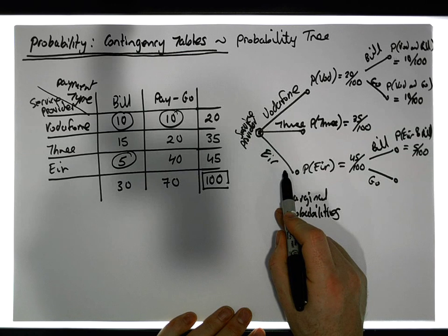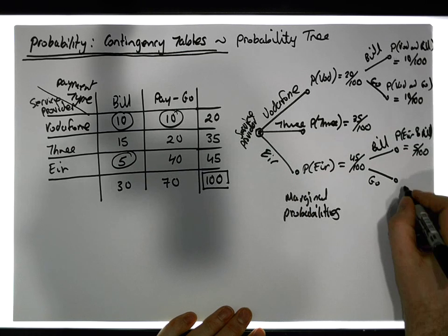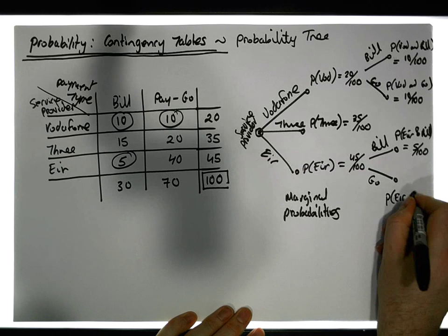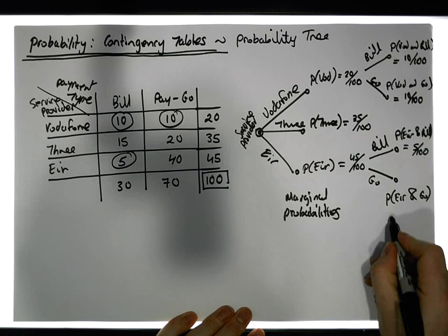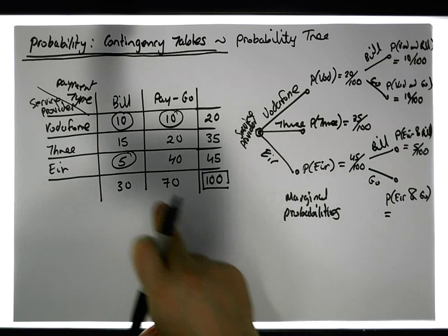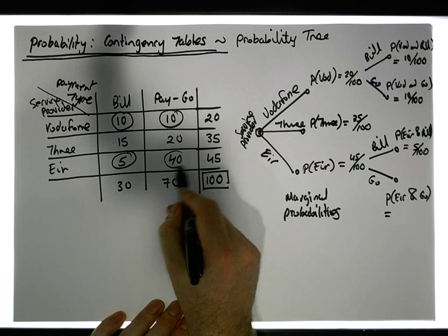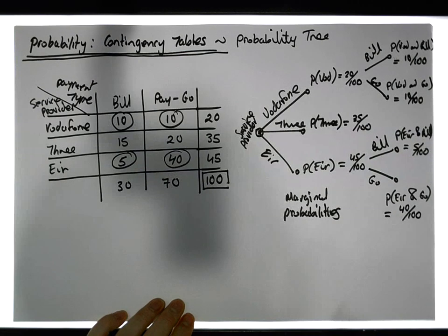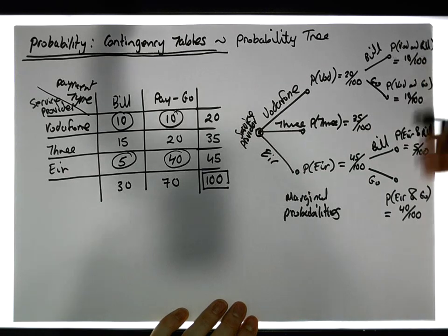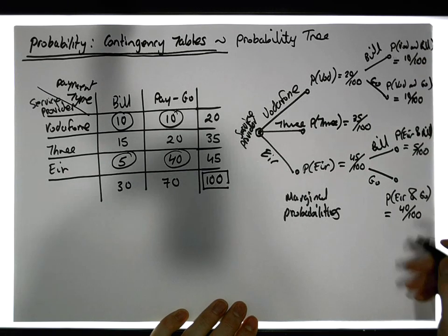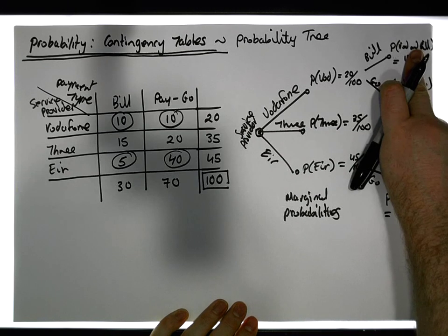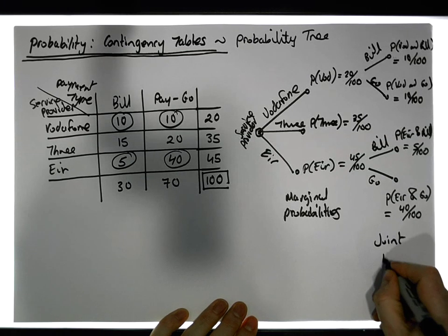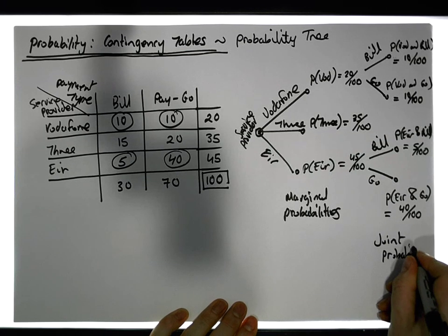These customers are Eir customers who are pay-as-you-go, so this probability is P(Eir and pay-as-you-go), which gives us 40 chances out of 100. These probabilities using 'and' are known as the joint probabilities, or joint events.